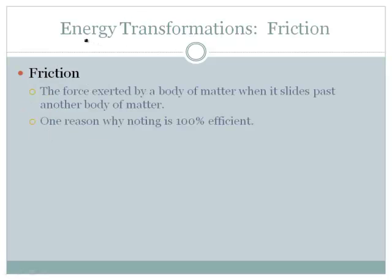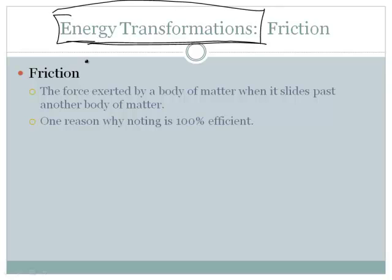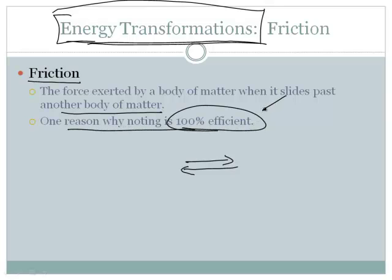I want to talk about those energy types, mechanical and chemical and stuff. But before we do that, I want to talk about something called transformations. We're going to talk about how we can change one form of energy into another. But one of the key players whenever we have an energy transformation is something called friction. You know what friction is. The force exerted by a body of matter when it slides past another body of matter. If I take my hands and rub them together, my hands warm up and there's friction. Whenever we have two objects that slide past each other, that creates friction. And that friction is one reason why nothing is 100% efficient.